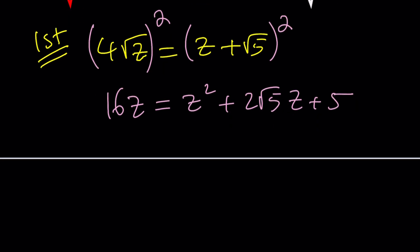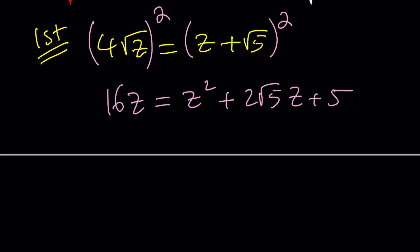And we can put everything on the same side: z² + (2√5 - 16)z + 5 = 0. Let's go ahead and solve this using the quadratic formula, right?